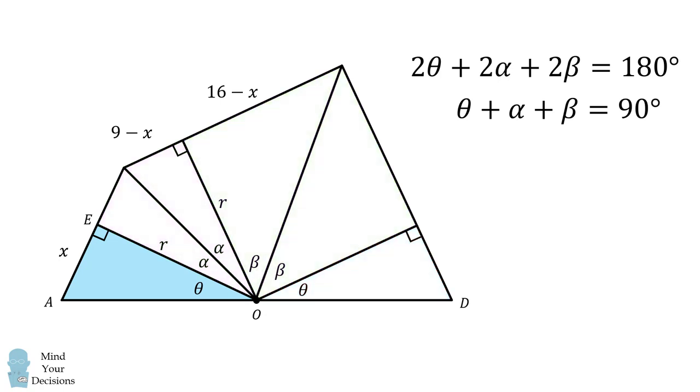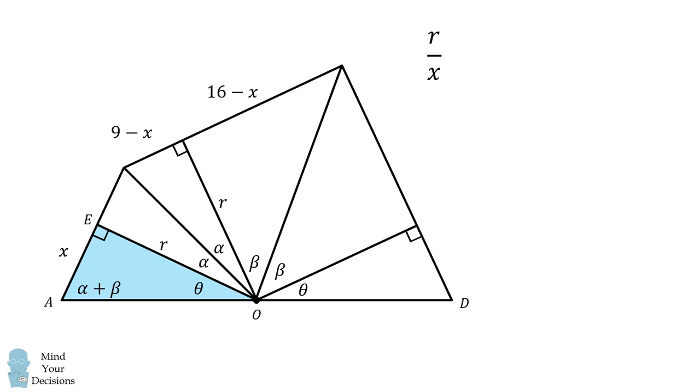So we focus on this right triangle, where one angle is equal to theta, another angle is a right angle, the remaining angle must be equal to alpha plus beta. We then have r over x is equal to the tangent of the quantity alpha plus beta. We can use the tangent sum formula to get the following equation.